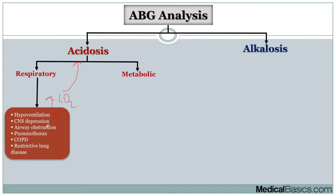Causes of respiratory acidosis include things like CNS depression, airway obstruction preventing proper ventilation, pneumothorax, COPD, and restrictive lung disease. COPD and restrictive lung disease are more in the chronic setting, while CNS depression and airway obstruction would more likely be in the acute setting.